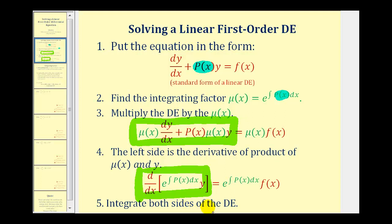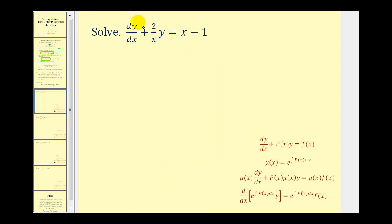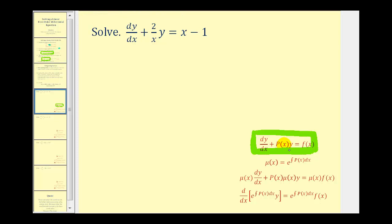Let's take a look at our first example. The first thing we need to do is make sure that we have a linear first order differential equation that fits this standard form, and we do. Next we want to identify the function p of x, which is being multiplied by y. So in this case, p of x is equal to two divided by x.